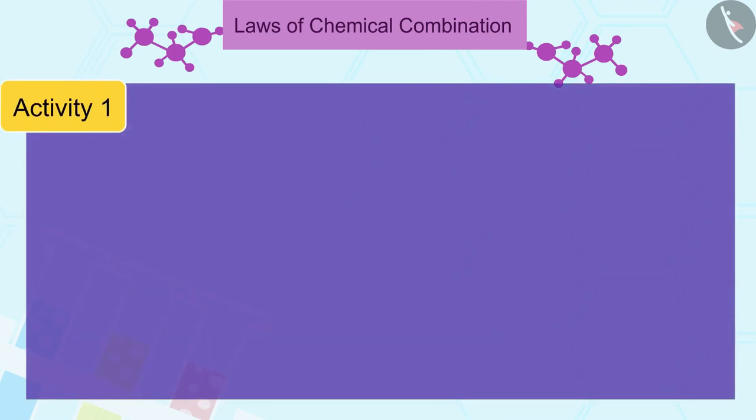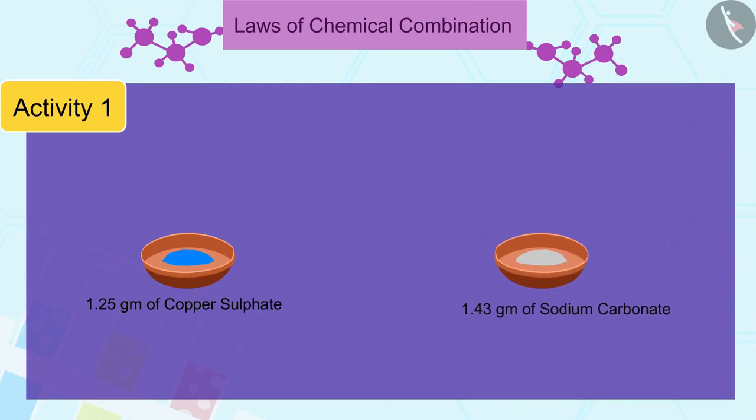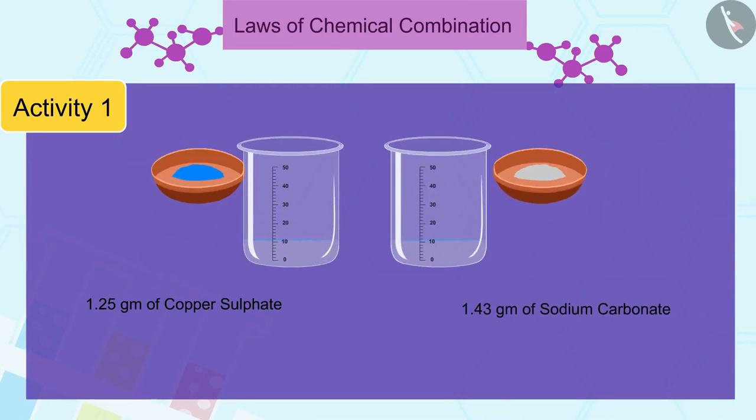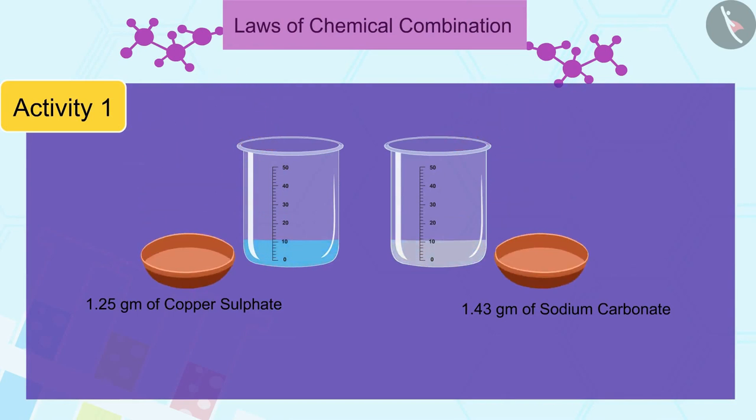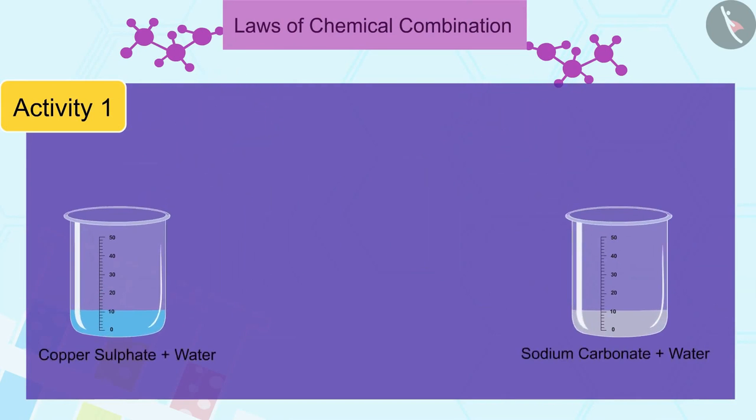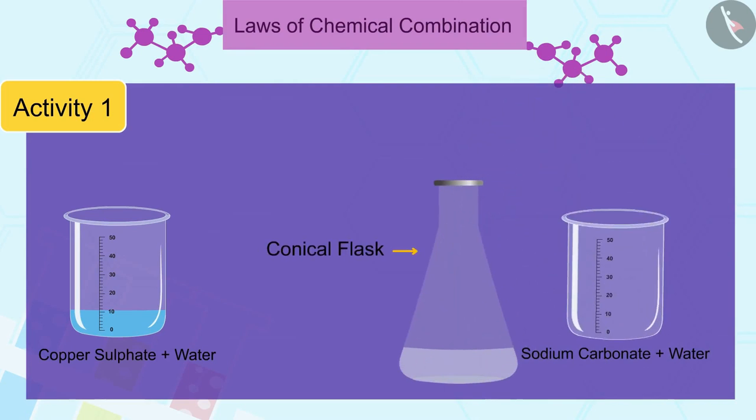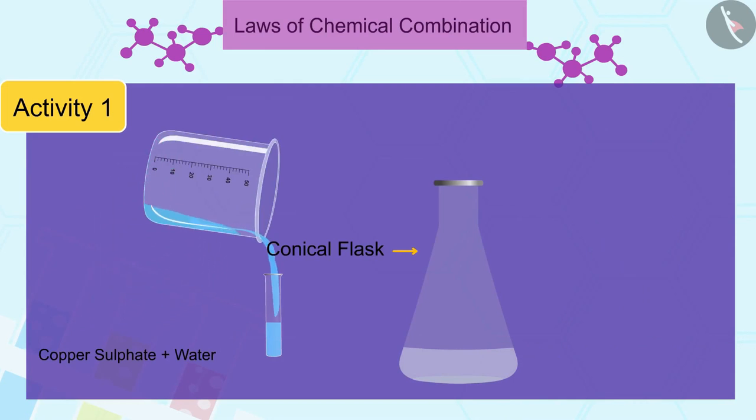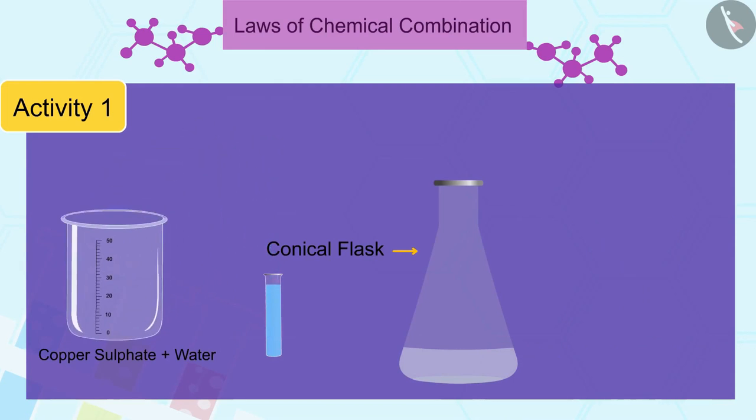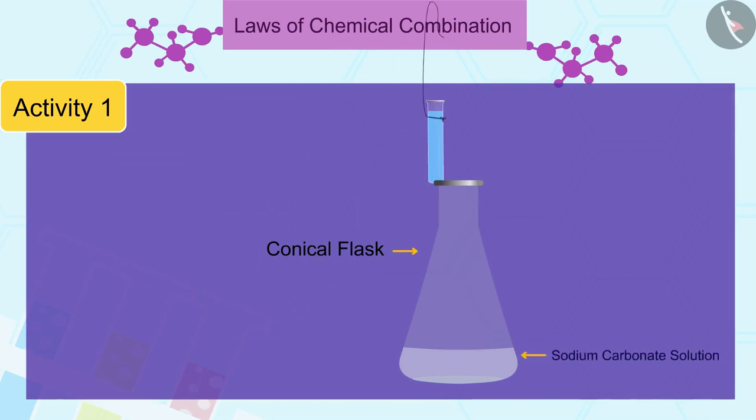Prepare two separate solutions of 1.25 grams of copper sulfate and 1.43 grams of sodium carbonate in 10 ml of water. Now, take the sodium carbonate solution in a conical flask and take the copper sulfate solution in a small test tube. Hang the ignition tube in the flask carefully. See that the solutions do not get mixed. Put a cork on the face of the flask.